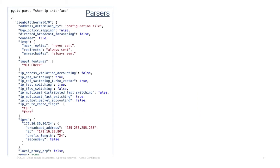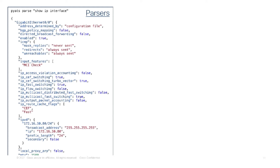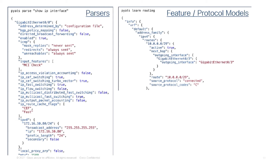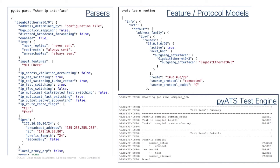Here we can see a parser in action. I'm using PyATS parse to run 'show IP interfaces', and then without having to do any regex, I can take all of that output that comes back from the switch and convert it into Python objects, which here we see rendered as JSON. If we want to go above the CLI command level to those features or protocols, I've got 'PyATS learn routing', which will create an agnostic instance of all of the routing details no matter what the protocols are — static or dynamic — and again turn it into a Python object. From our test execution engine, here we can see the output from running a sample job, each of the tasks that have passed, reports are generated, and all the output is gathered for you to use.